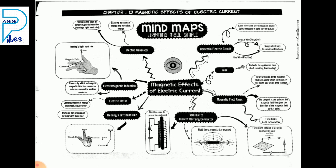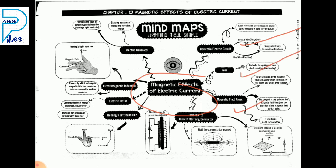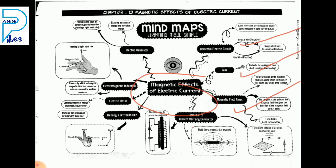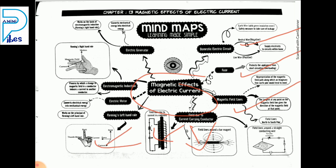If we draw the mind map on magnetic effects of electric current, the topics we covered include: domestic electric circuit, what is fuse, and how magnetic field lines are formed. Pattern of magnetic field lines on bar magnet, on solenoid, on straight current-carrying conductor.